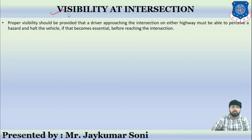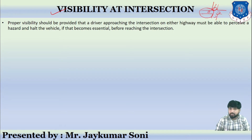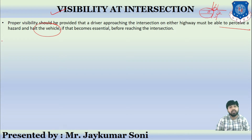Proper visibility at an intersection is important. When a driver is approaching from one side of the highway, he must be able to see whether any vehicle or obstruction is entering from the intersecting path. Proper visibility should be provided so that a driver approaching the intersection on either side of the highway must be able to perceive a hazard and halt the vehicle, because halting the vehicle leads to a reduction of accidents.